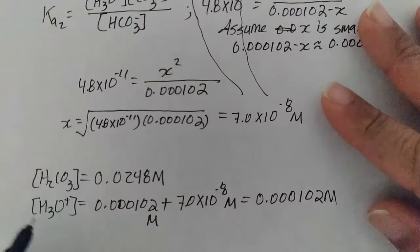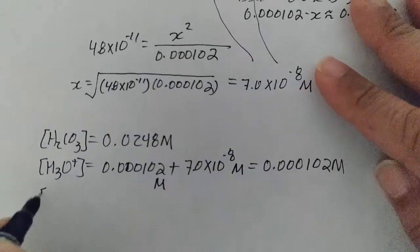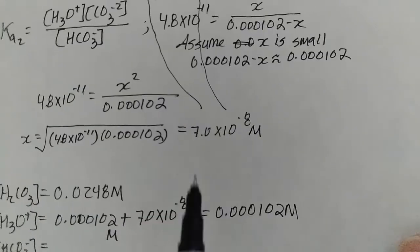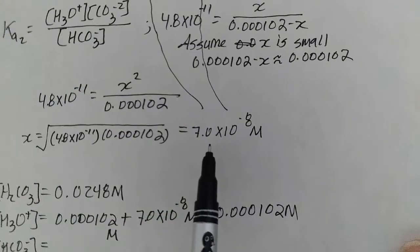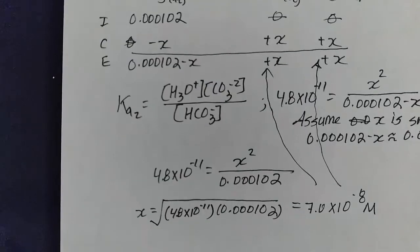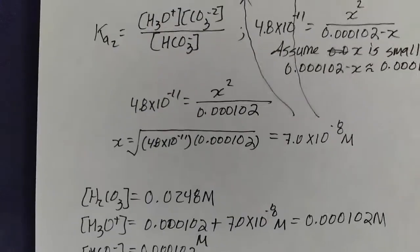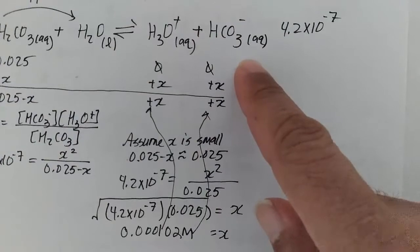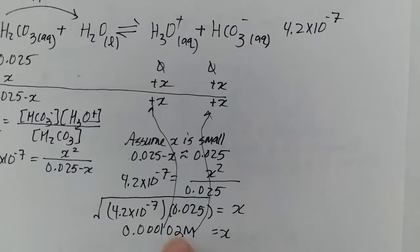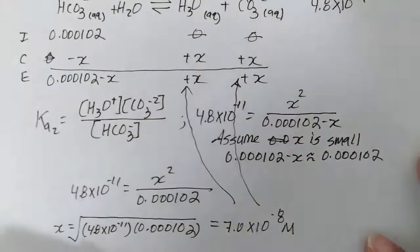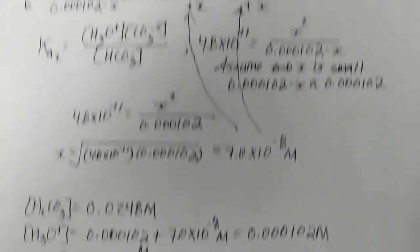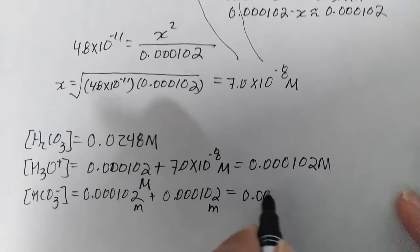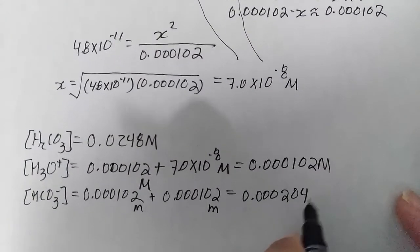We have the concentration of bicarbonate HCO3^-, which is going to be 0.000102 - x, which is a super small number. So we'll just go ahead and make that 0.000102 plus the concentration of HCO3 from our first ionization, which is 0.000102. So this is going to be about 0.000102 molar.